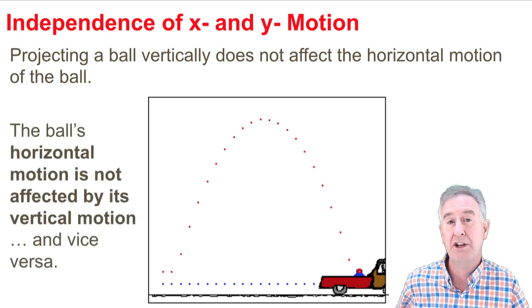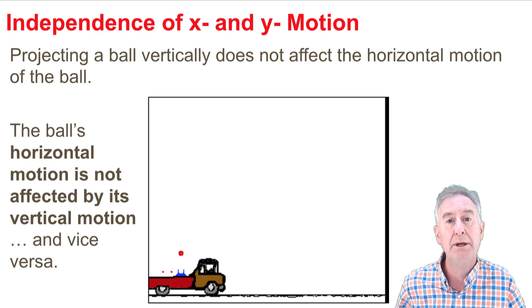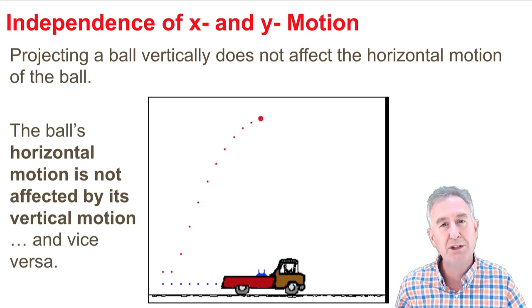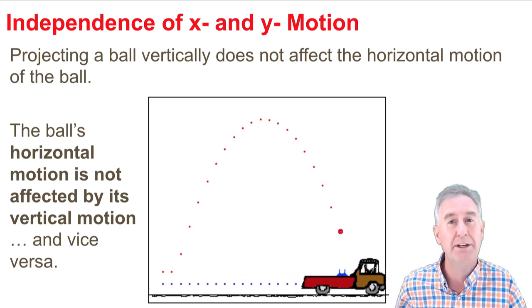This is an illustration of the idea that the ball's horizontal motion is independent of its vertical motion. These two components of motion are independent of one another.